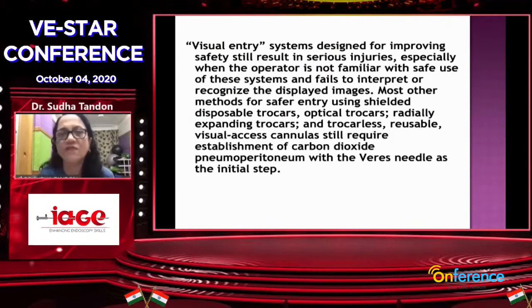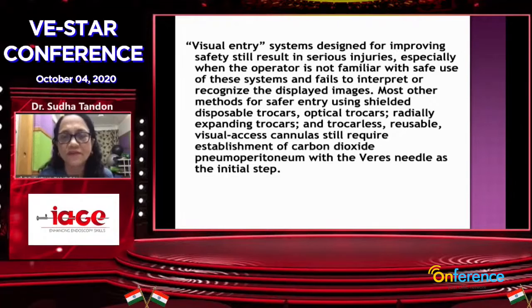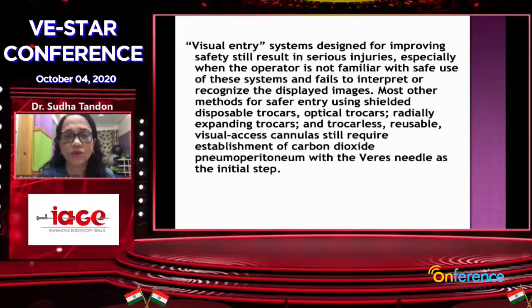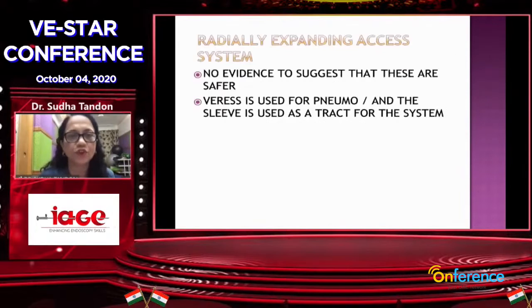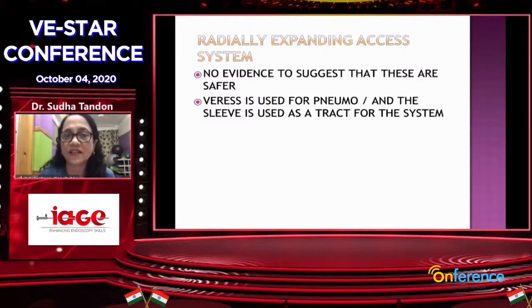Visual entry systems, which are designed for improving safety, still result in serious injuries, especially when you're not familiar with all the tissues you're going through. All disposable trocars, optical trocars, and radially expanding trocars require pneumoperitoneum to be established before you actually put your trocars. There is no evidence that radially expanding access systems are safer.